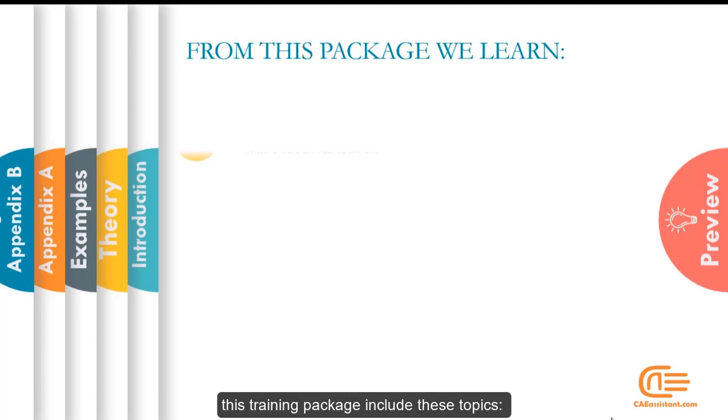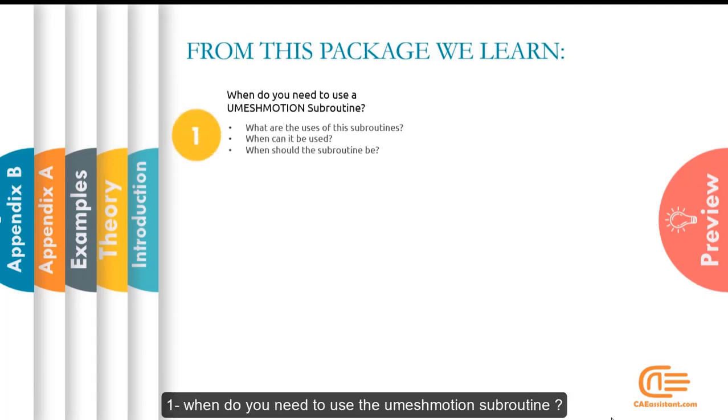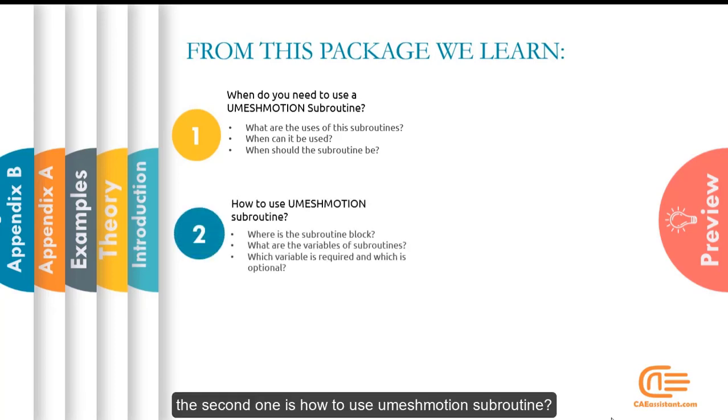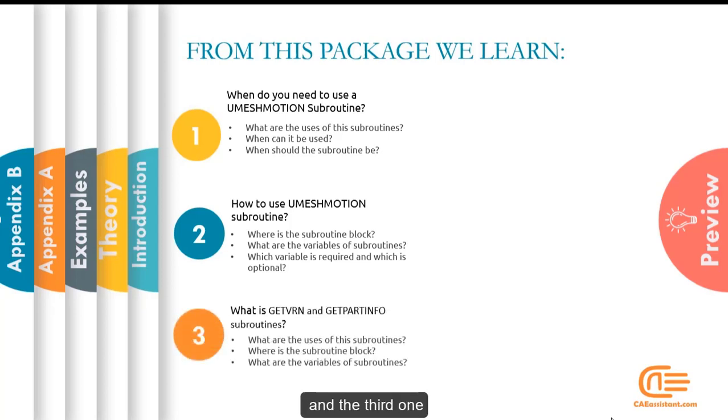This training package includes these topics. When do you need to use the UMESHMOTION Subroutine? What are the uses of the subroutine? When can it be used? And when should the subroutine be? The second one is how to use UMESHMOTION Subroutine. Where is the subroutine block? What are the variables of subroutine? Which variable is required? And which is optional?